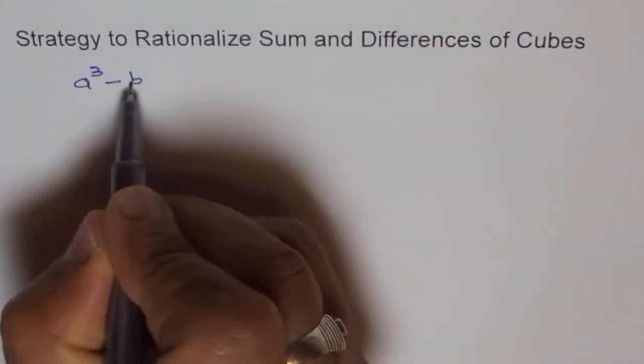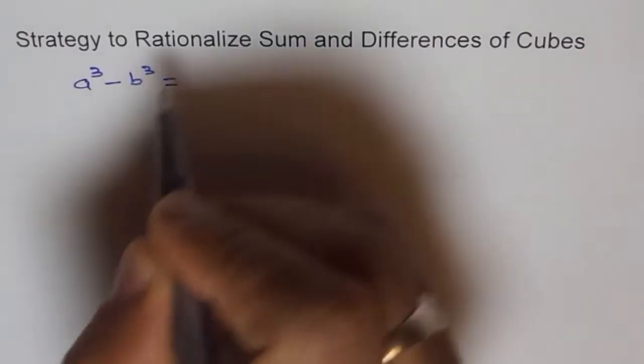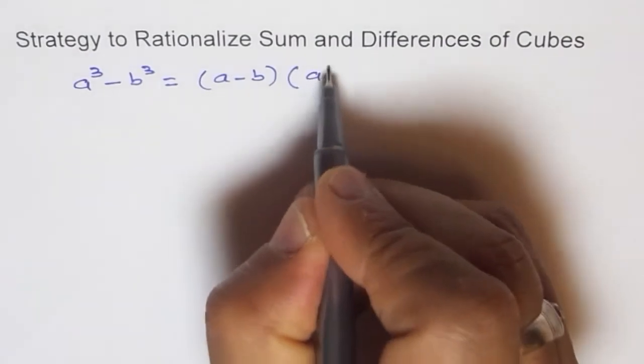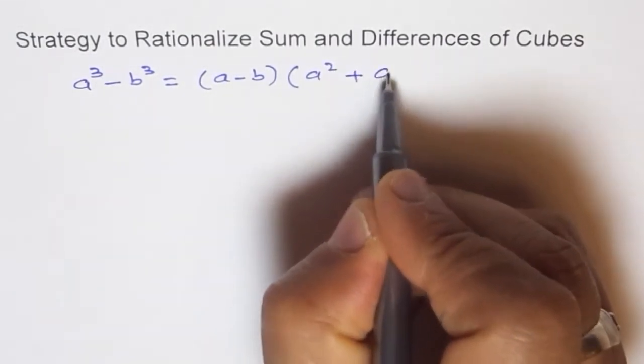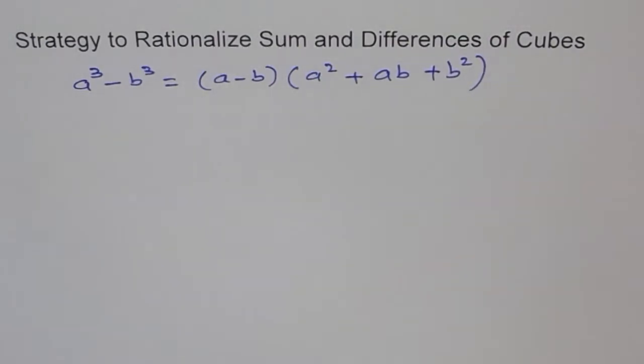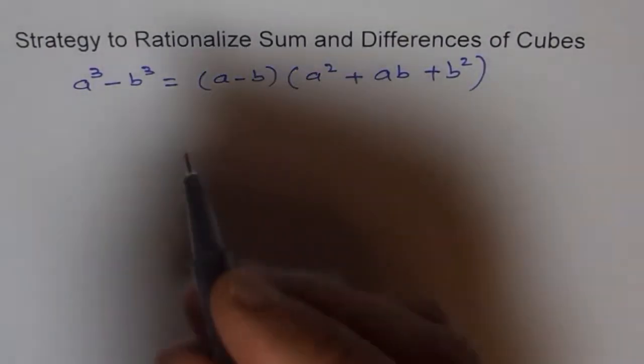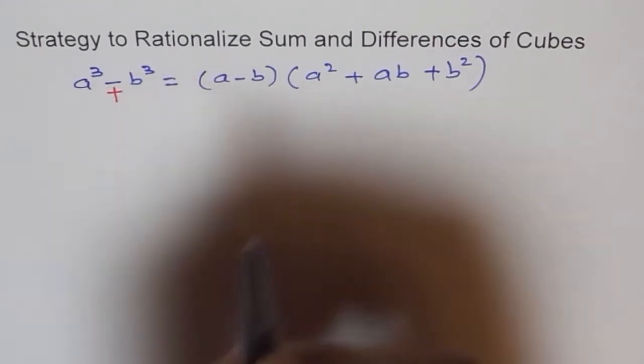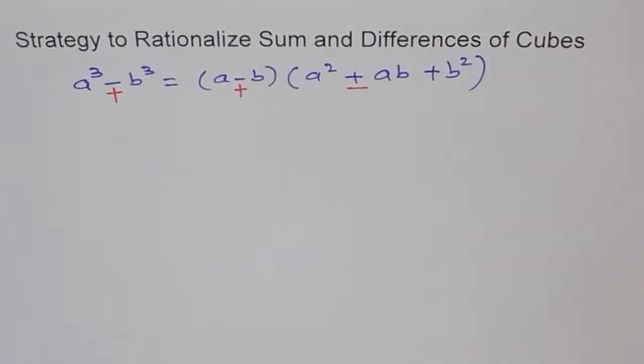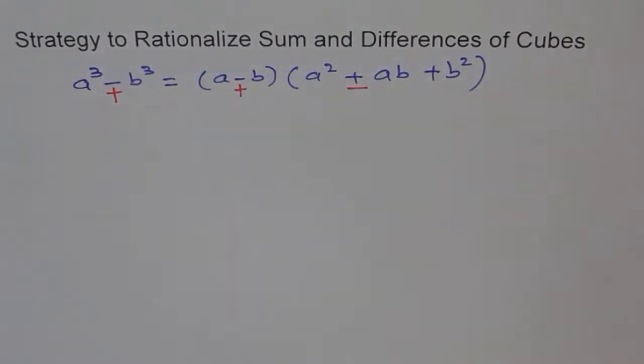Something like a³ - b³ is equal to (a - b)(a² + ab + b²), right? And if we have plus here, for example, in that case this sign changes to plus and this sign changes to minus and that is how the formula is.